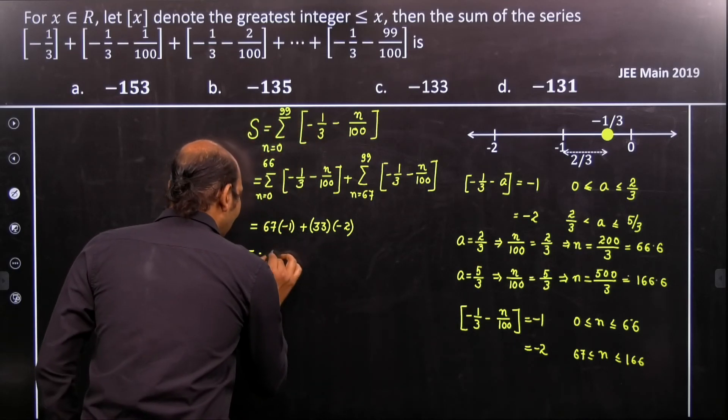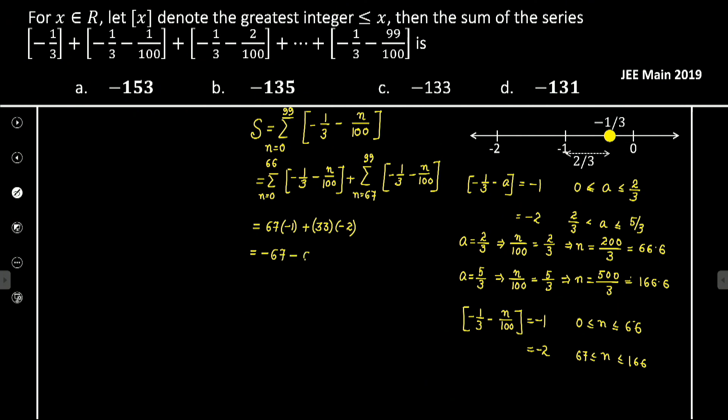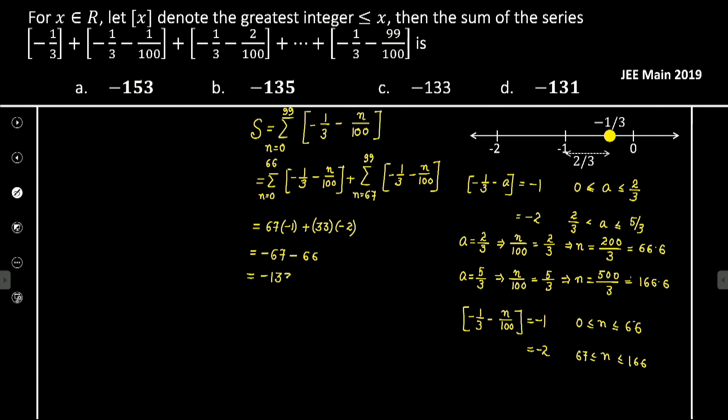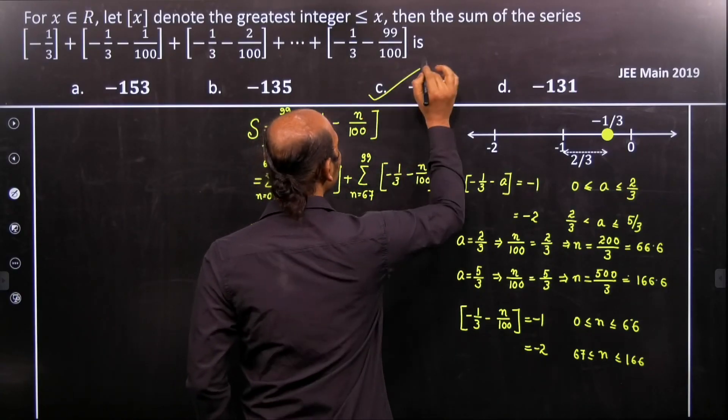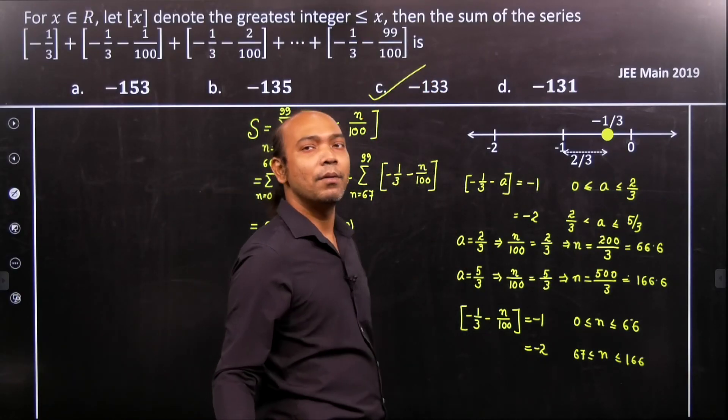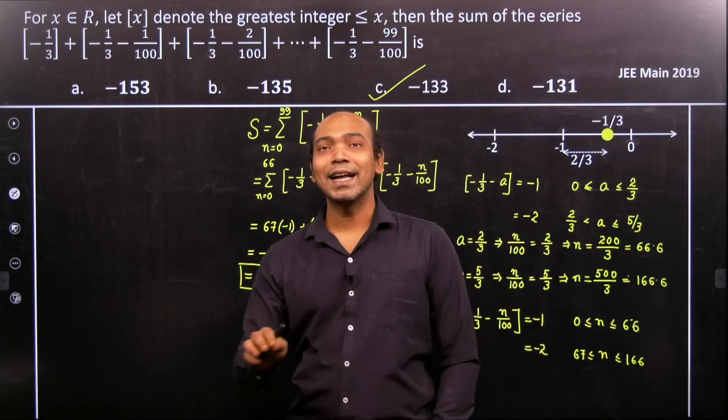If I calculate, we get minus 67 and minus 66, so that gives you minus 133. So for this particular problem, the final sum is option C, minus 133.